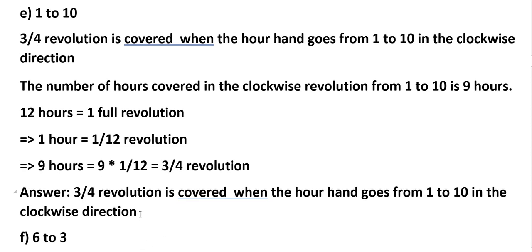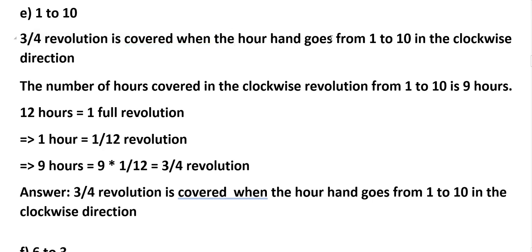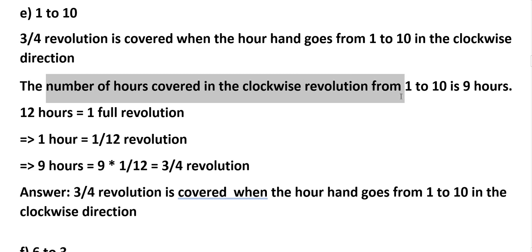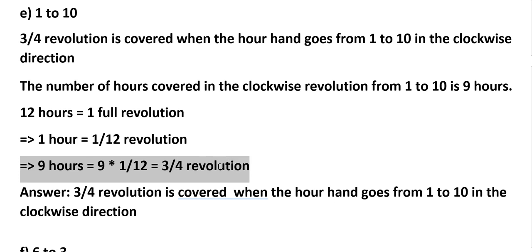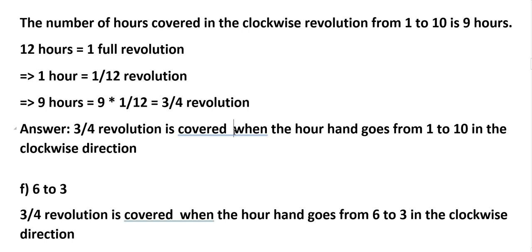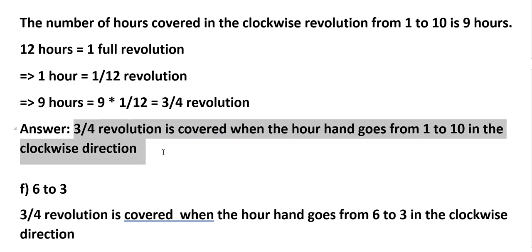E: 1 to 10. Three-fourths revolution is covered when the hour hand goes from 1 to 10 in the clockwise direction. The number of hours covered from 1 to 10 is 9 hours. So 1 hour equals 1/12 revolution, therefore 9 hours equals 9 × 1/12, that is 3/4 revolution. Answer: 3/4 revolution covered when the hour hand goes from 1 to 10 in the clockwise direction.